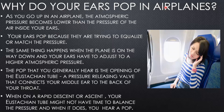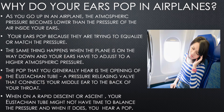Why do your ears pop in airplanes? As you go up in an airplane, the atmospheric pressure becomes lower than the pressure of the air inside your ears. Your ears pop because they are trying to equalize or match the pressure. The same thing happens when the plane descends and your ears adjust to the higher atmospheric pressure. The pop you hear is the opening of the Eustachian tube — the pressure-releasing valve in your ear that connects your middle ear to the back of your throat.